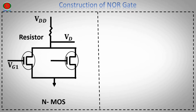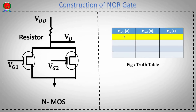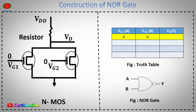The NOR gate has input terminal VG1 and input terminal VG2. The NOR gate output terminal is also indicated.